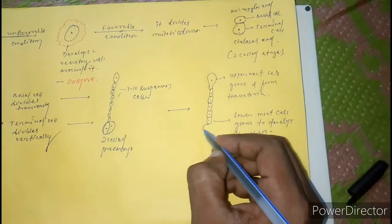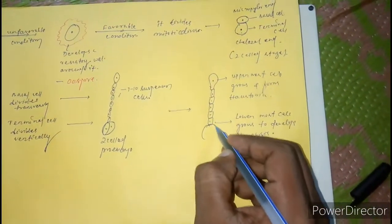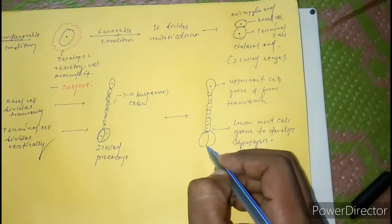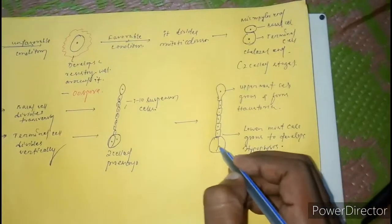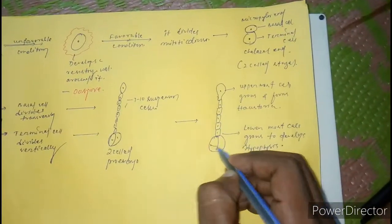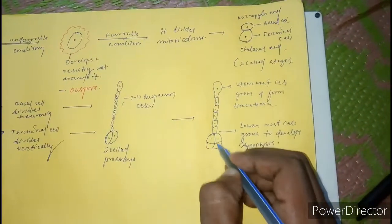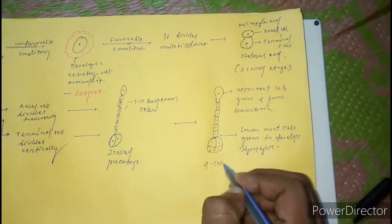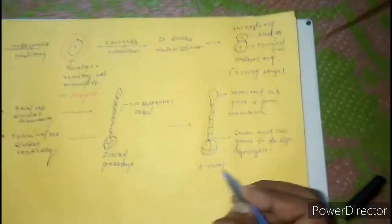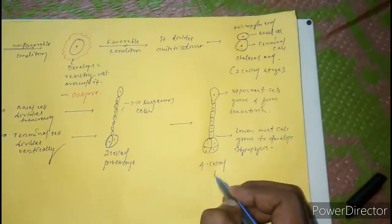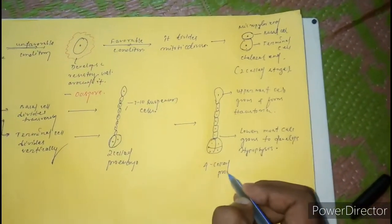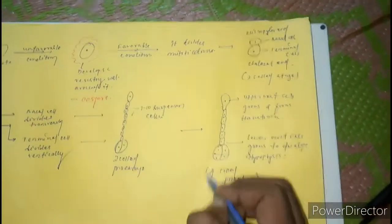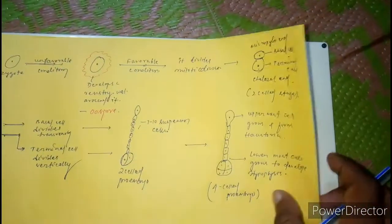Now the 2-cell pro-embryo undergoes division to form a 4-cell pro-embryo.